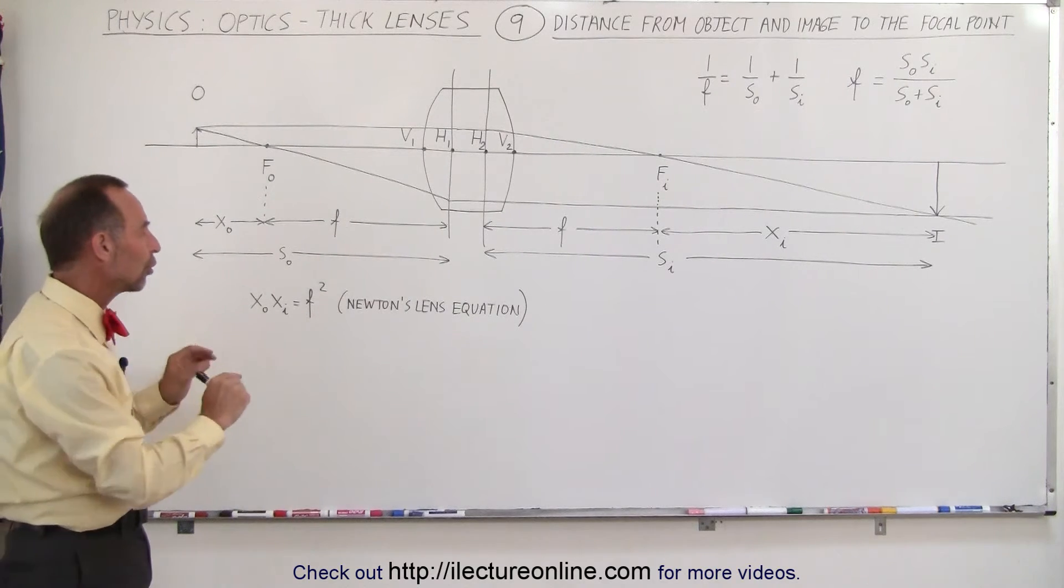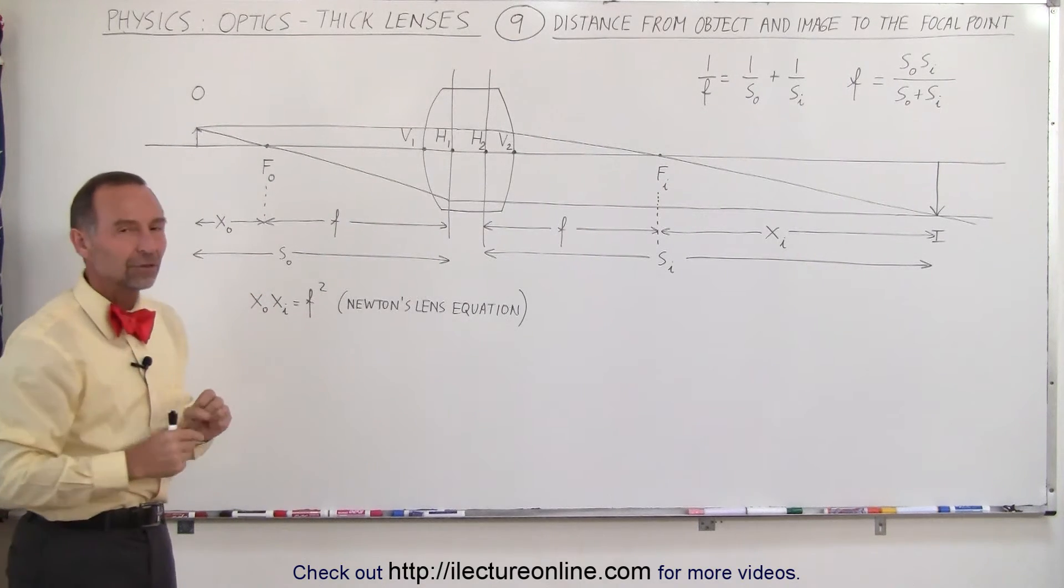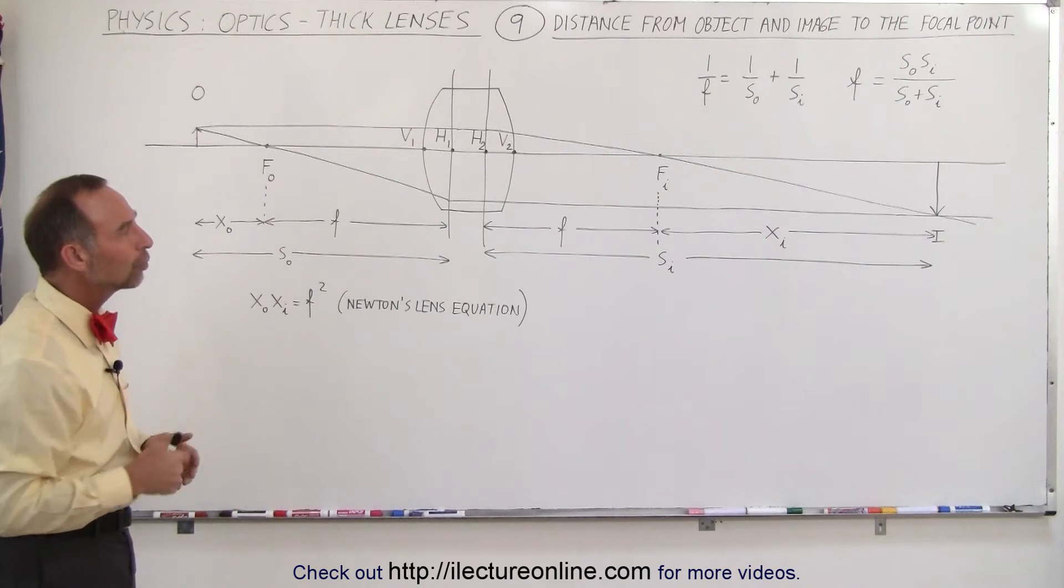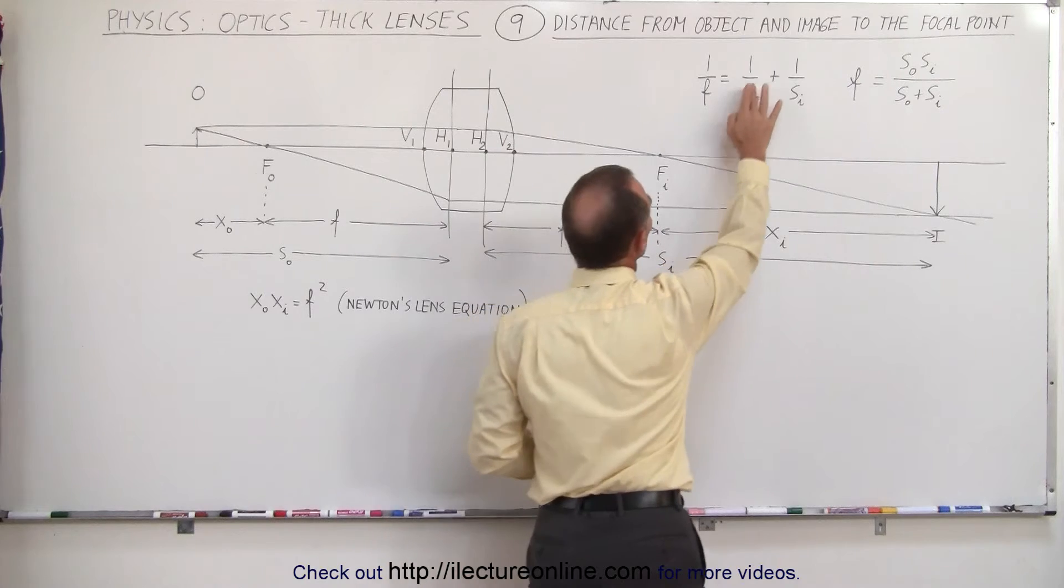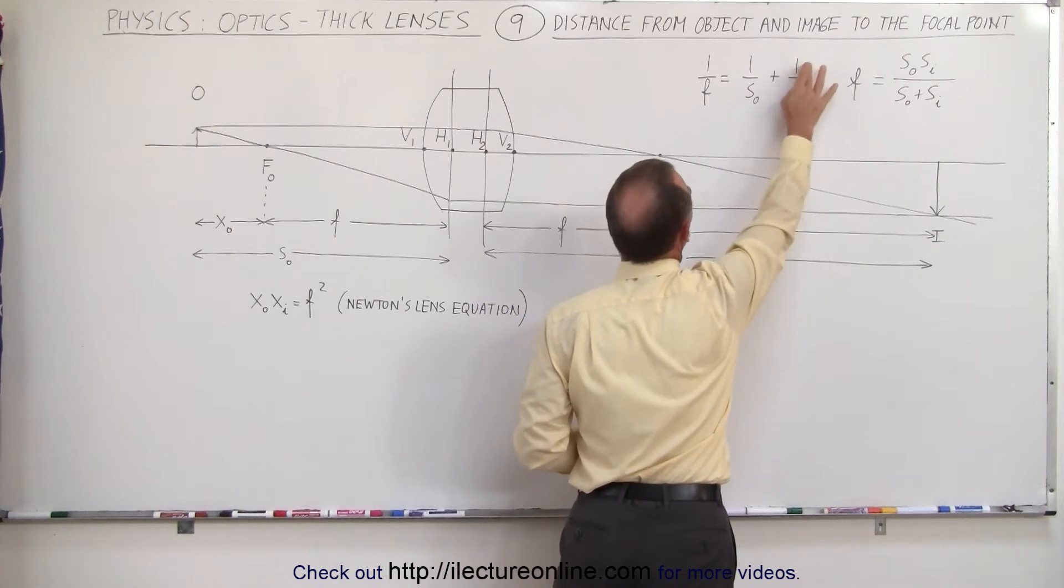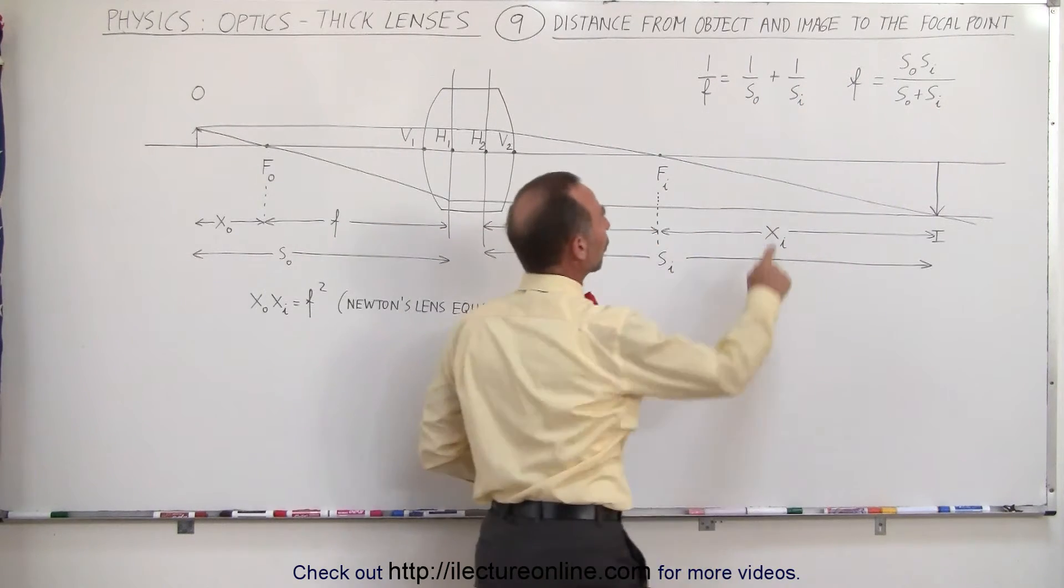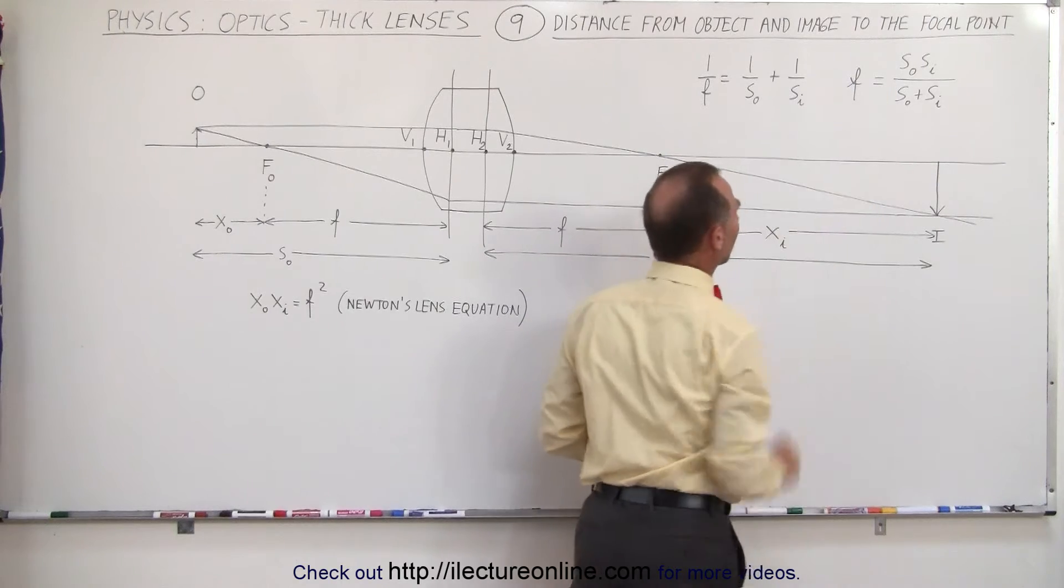In the next video we're going to show you how that was done graphically, so you can get a good feel for it, but here we're going to do it using this lens equation: 1 over the focal length equals 1 over the object distance plus 1 over the image distance. Of course we can solve this for f and make it look like that.